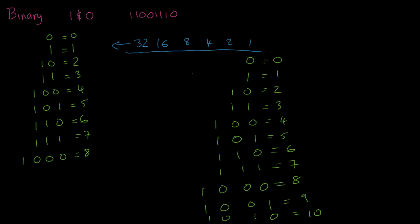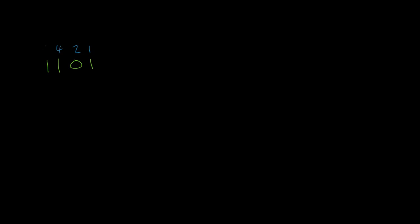With four bits the highest number you can have is 15, and with five bits the highest is 31. That's how it works. To convert binary back to decimal, we just work backwards. Take a four-bit number like 1 1 0 1 — write the column values above: 1, 2, 4, 8. Then add them: 8 plus 4 plus nothing plus 1. That's 8 plus 4 equals 12, plus 1 equals 13.